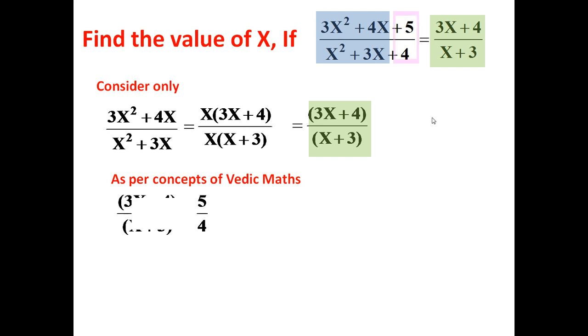Simply using Vedic Mathematics, we can write 3x plus 4 divided by x plus 3 is equal to 5 by 4. These constant terms. 3x plus 4 divided by x plus 3 is equal to 5 by 4.